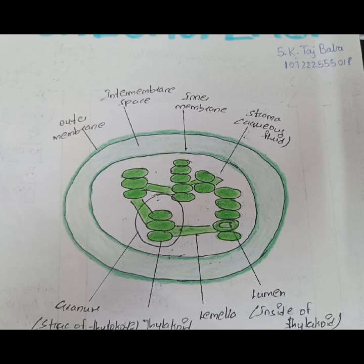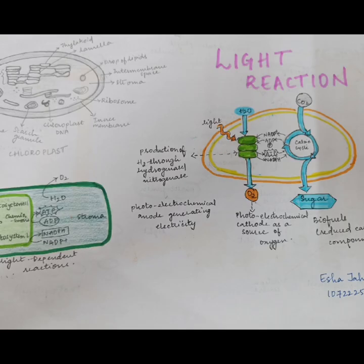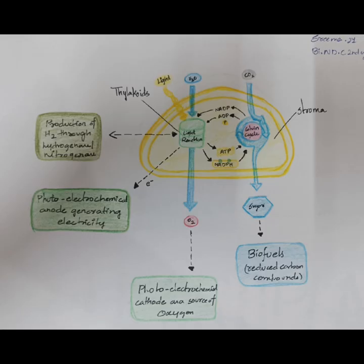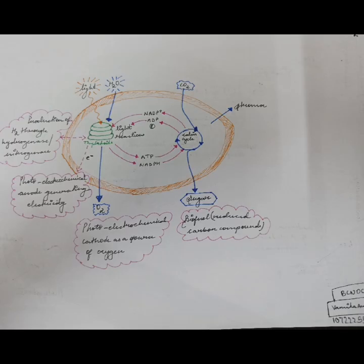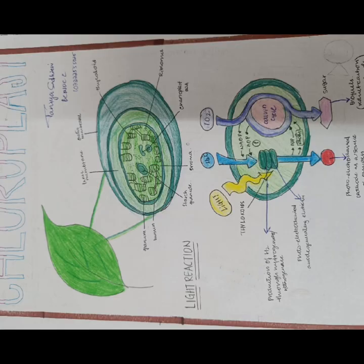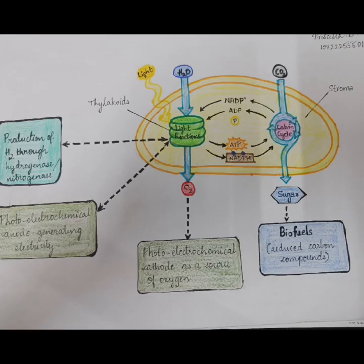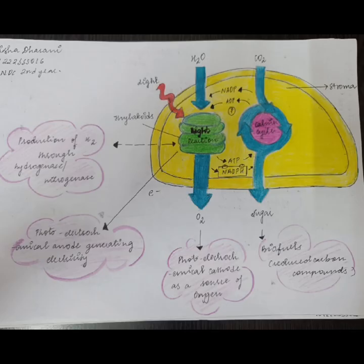A function of those pigments is to absorb light energy for the process of photosynthesis. Other pigments, such as carotenoids, are also present in chloroplasts and serve as accessory pigments, trapping solar energy and passing it to chlorophyll.